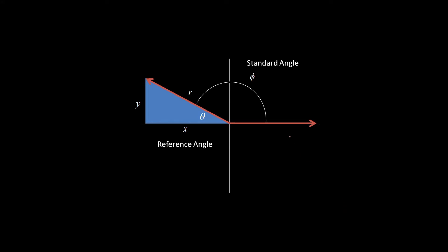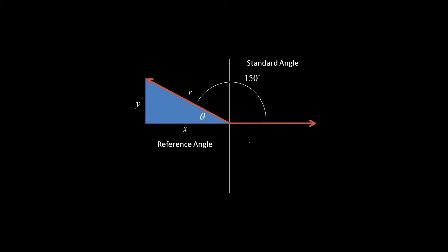Going back to our picture: we have our standard angle between the initial and terminal, and that will always form a right triangle when you draw down to the x-axis — or up to the x-axis, depending where you are. And that interior angle is always what we call the reference angle. Let's say this is 150 degrees. Knowing that a straight line is 180, we can figure out what theta is — that must be 30.